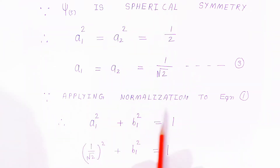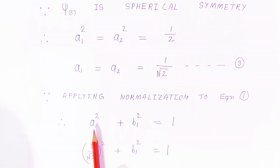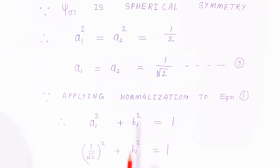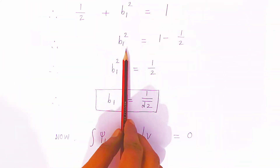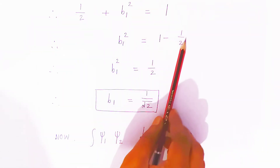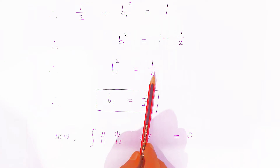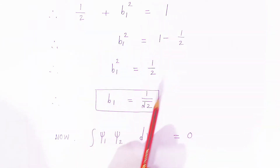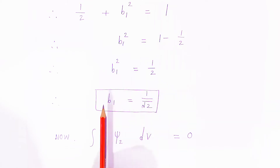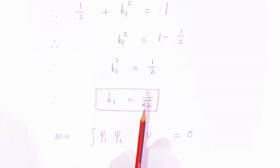When you apply normalization to equation 1, the coefficient of the first wave function gives A₁² + B₁² = 1. Substituting A₁ = 1/√2, we get (1/√2)² + B₁² = 1, which is ½ + B₁² = 1. Therefore B₁² = 1 − ½ = ½, and so B₁ = 1/√2.